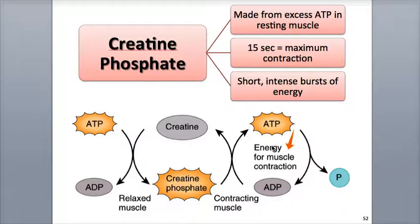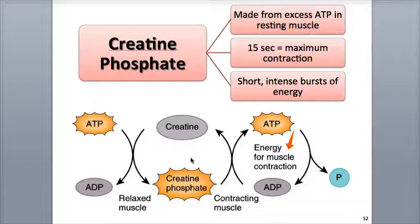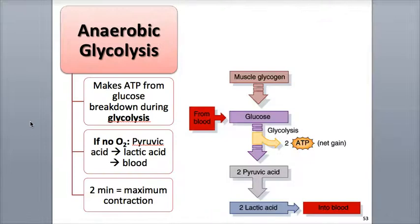As ATP is used during muscle contraction, the amount of ADP in the muscle fiber increases. The phosphate group on creatine phosphate can now be transferred to ADP with the help of creatine kinase, rapidly creating more ATP for immediate use in muscle contraction. Think of creatine phosphate as a temporary holder of phosphate, holding onto it and releasing it to ADP to recharge the molecule into making more ATP when needed. Because of the rapid speed of ATP formation from creatine phosphate, it is the primary energy source that fuels the beginning of muscle contraction. Creatine phosphate is able to fuel short, intense bursts of energy, such as running after a bus or sprinting, and is able to sustain a maximum contraction of about 15 seconds.